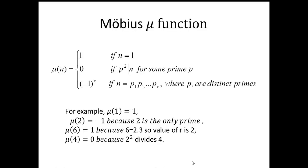In this class we are going to study number-theoretic functions. Some of the functions we have already studied in the last lecture, but I would like to revise the Möbius mu function again. The Möbius mu function, denoted μ(n), is defined as: μ(n) = 1 if n = 1; μ(n) = 0 if p² divides n for some prime p; and μ(n) = (−1)^r if n is square-free, meaning n = p₁p₂···pᵣ where the pᵢ are distinct primes.